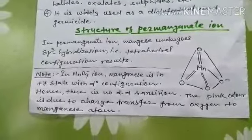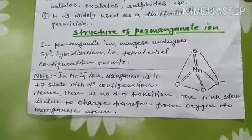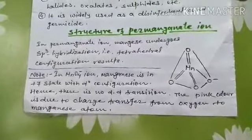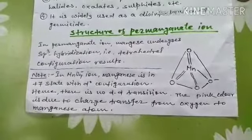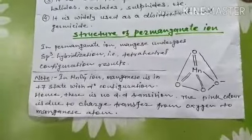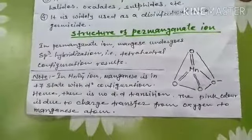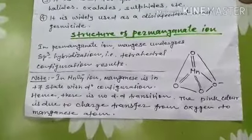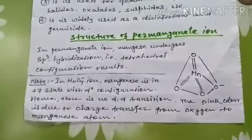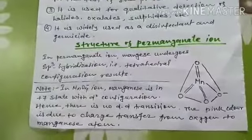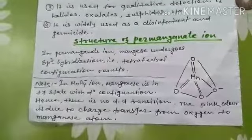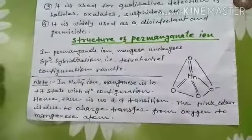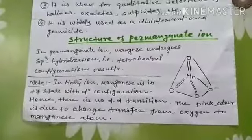In the permanganate ion, manganese is in the +7 state and d⁰ configuration, which is why there is no chance of d-d transition. The pink color of this compound is due to charge transfer from oxygen to the manganese atom. More about this chapter will be discussed in the next video.